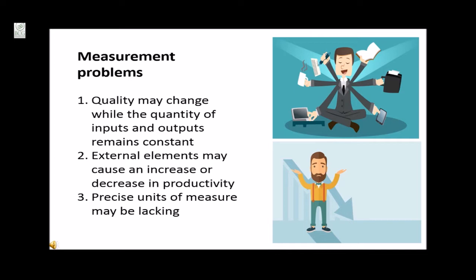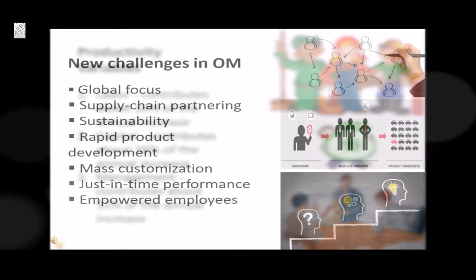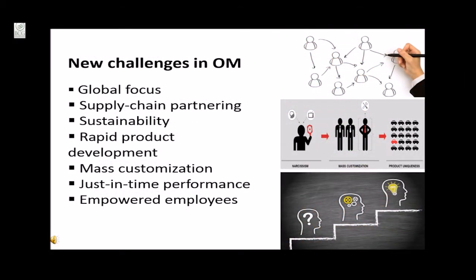The measurement problems are: first, quality may change while the quantity of inputs and outputs remain constant; second, external elements may cause an increase or decrease in productivity; and third, precise units of measure may be lacking. The productivity variables are labor, which contributes 10% of the annual increase; capital, which contributes about 38%; and management, which contributes about 52% of the annual increase.